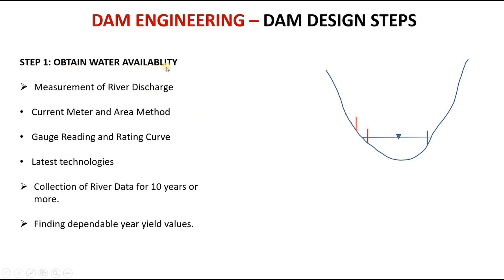The next step is to obtain water availability. Water availability means, if you take a cross section of the river, what is the water available in this river — that we have to find out. We find this by measuring the river discharge.